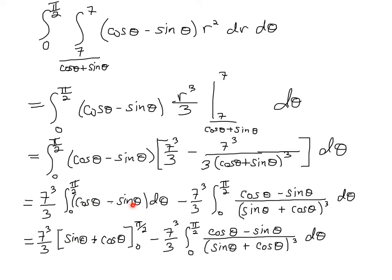For the first integral, integrating cosθ gives sinθ and integrating sinθ gives −cosθ, so I get [sinθ + cosθ] evaluated from 0 to π/2. At π/2: sin(π/2) = 1 and cos(π/2) = 0, giving 1. At 0: sin(0) = 0 and cos(0) = 1, giving 1. So this integral equals 1 − 1 = 0.